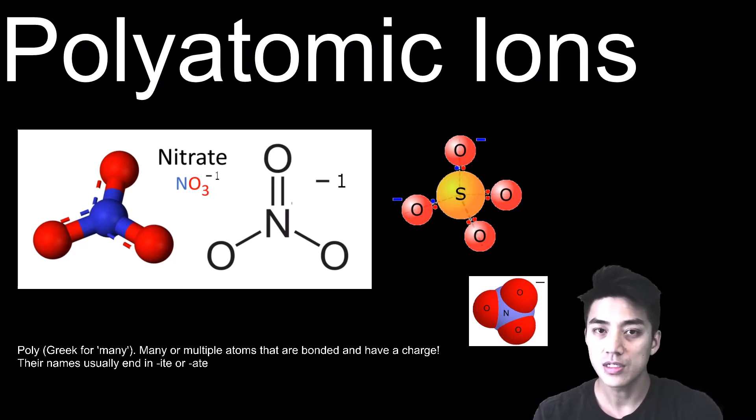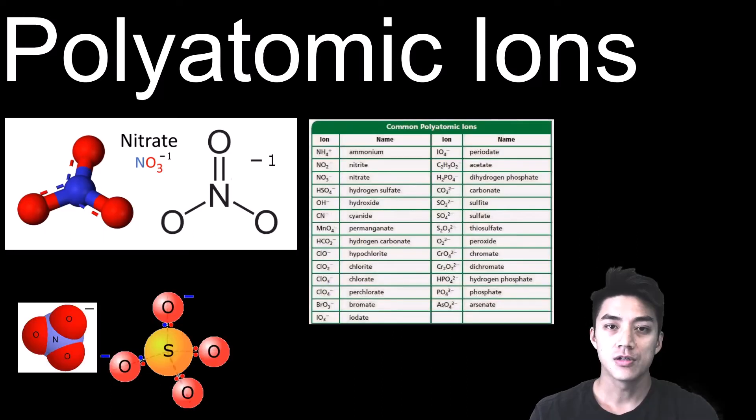Just understand that most of these polyatomic ions end in either -ite or -ate. These polyatomic ions can form ionic compounds with other elements. You are not expected to memorize the formulas and the charges of every single polyatomic ion out there. For someone like me, I rely on this chart here - the common polyatomic ion chart. This has some of the more commonly used polyatomic ions.